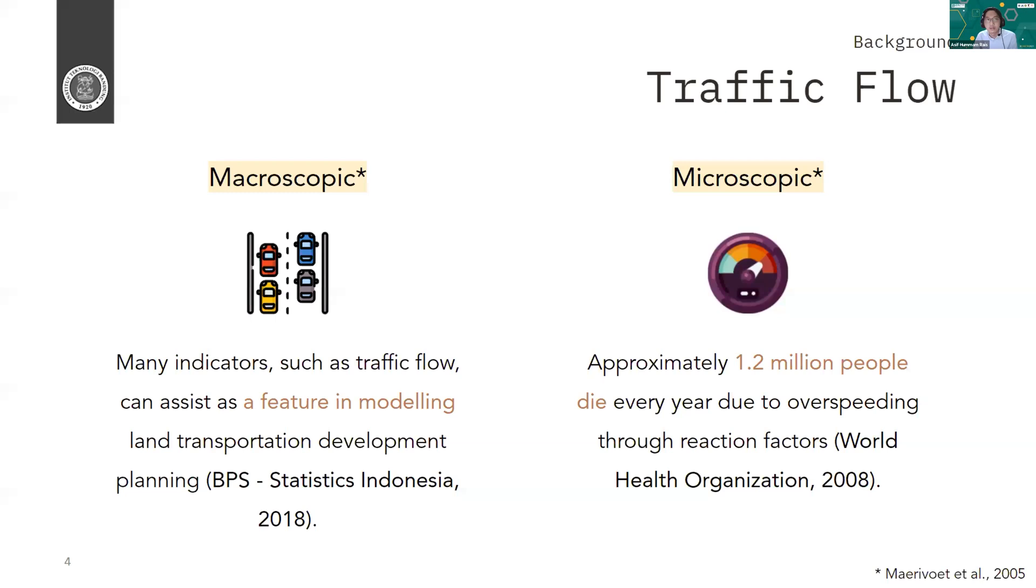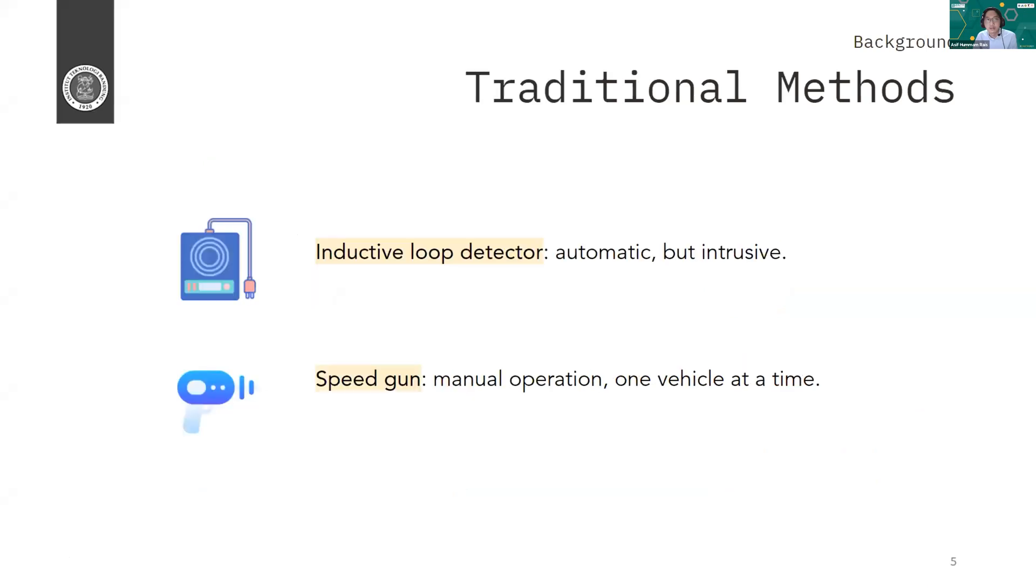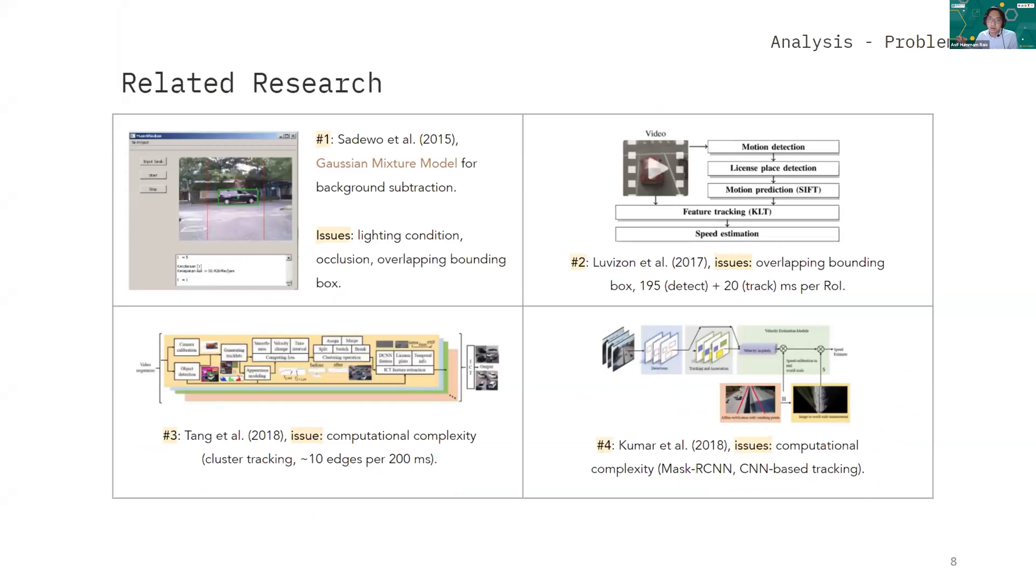And so for the analysis, there are actually many researches conducted about this topic. So issues for these researches are either unknown object solved. Like for example, if we use motion detection, it can detect other than cars. Like it can detect people or maybe animals even. And for another research that uses computer vision, I mean machine learning for detection, then it usually has computational complexity. Because basically, they are using serial processes, like machine learning process, and then another one using another machine learning process.